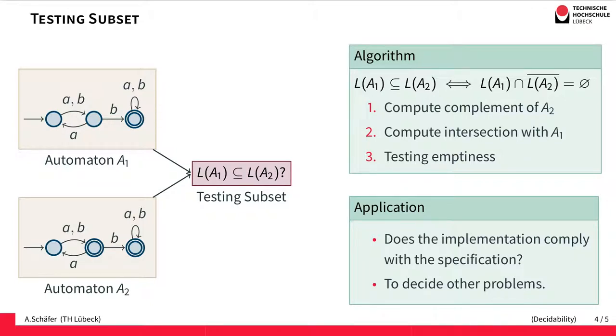And this decision procedure is useful for example if you would like to check whether an implementation given in terms of an automaton complies with a specification also given in terms of an automaton.